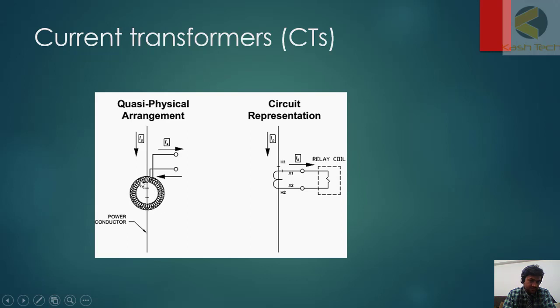And this is the secondary of CT, which has many turns, and further it is connected to the ammeter. Maybe it is connected to the relay or energy meter. So the current is passing through it, flux is then cutting this core, and it is producing the secondary voltage and secondary current.